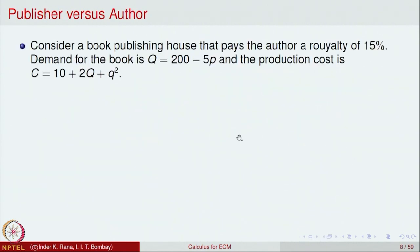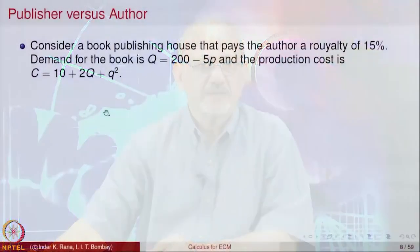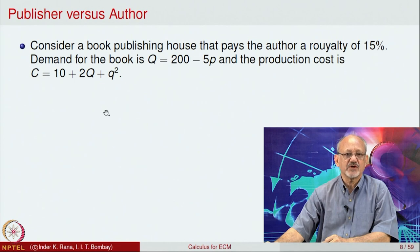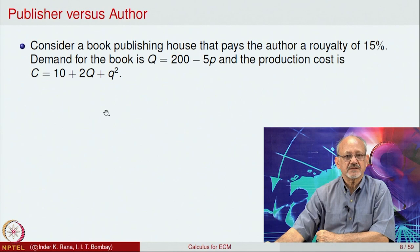Let us look at one more example: consider a book publishing house that pays the author a royalty of 15 percent. The publisher prints and sells books, and the author is given 15% of the selling price as royalty. The demand function for the book is Q = 200 − 5P, and the production cost is C(Q) = 10 + 2Q + Q².